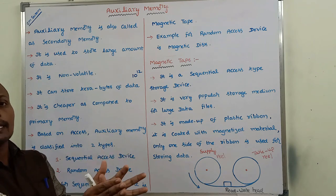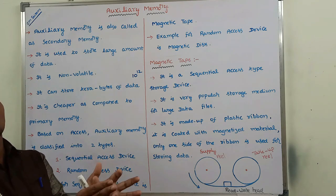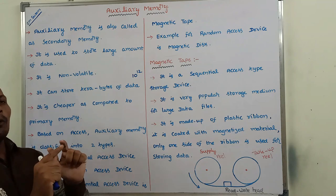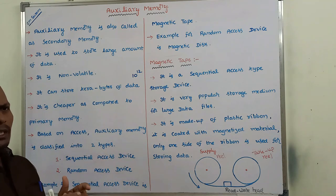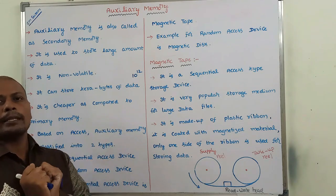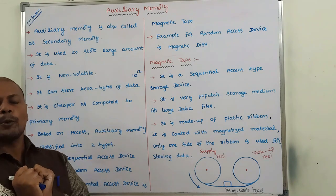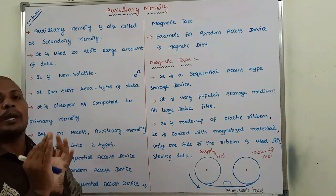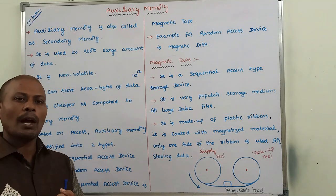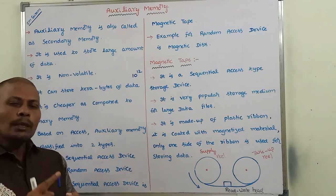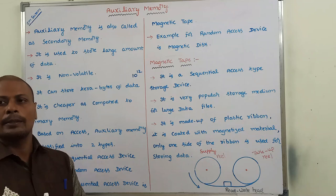In the case of a sequential access device, we have to access the data sequentially. Suppose there are five songs. If we want to access the third song, first we have to access the first song, next we have to access the second song, then we have to access the third song.